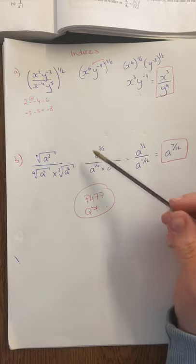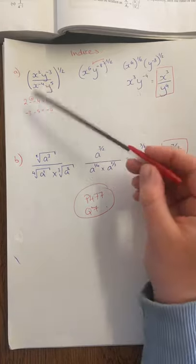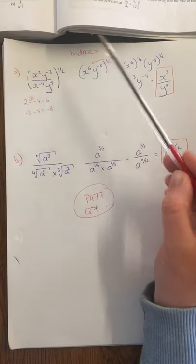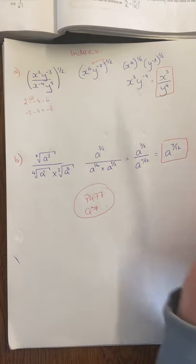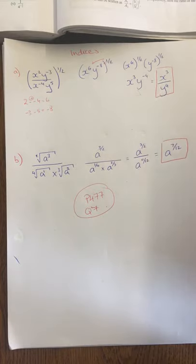So just stick with your rules of your indices. If you're dividing, subtract the powers. If it's power to a power, you multiply. If you have a minus up here, you can just bring it underneath and change the sign. Drop me an email if you have any questions. Thanks, lads.